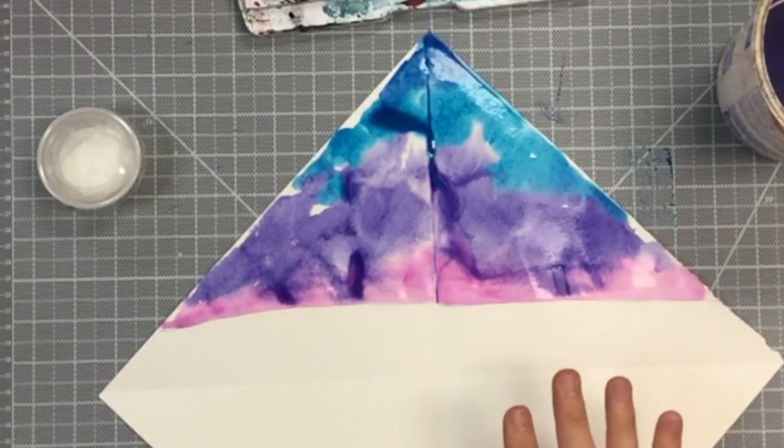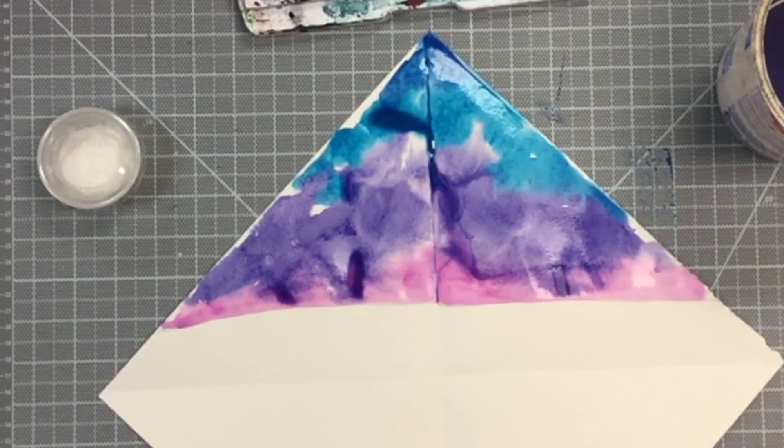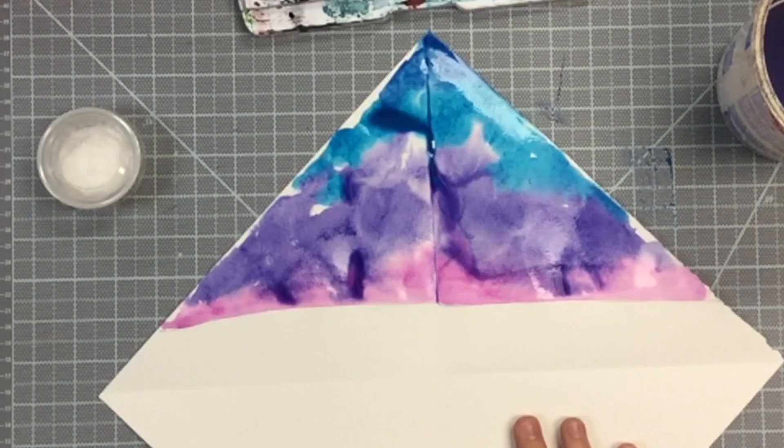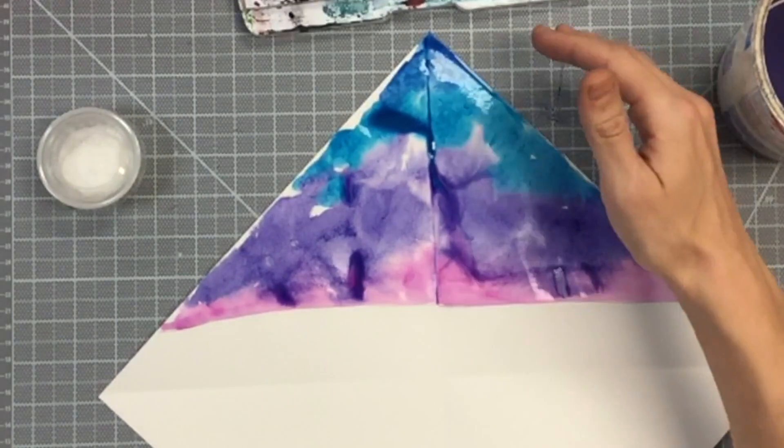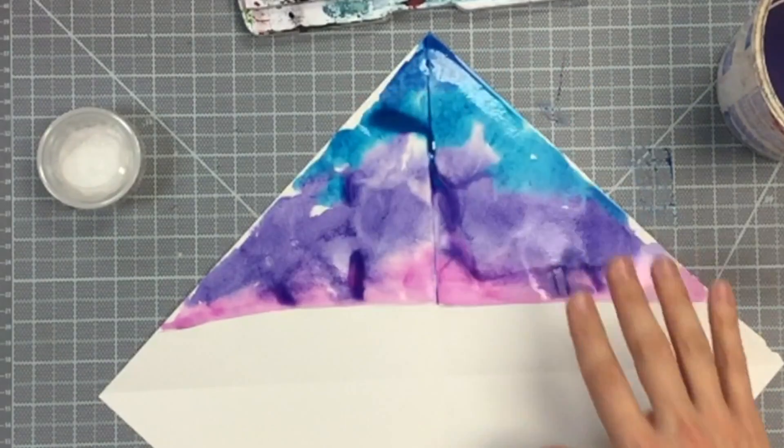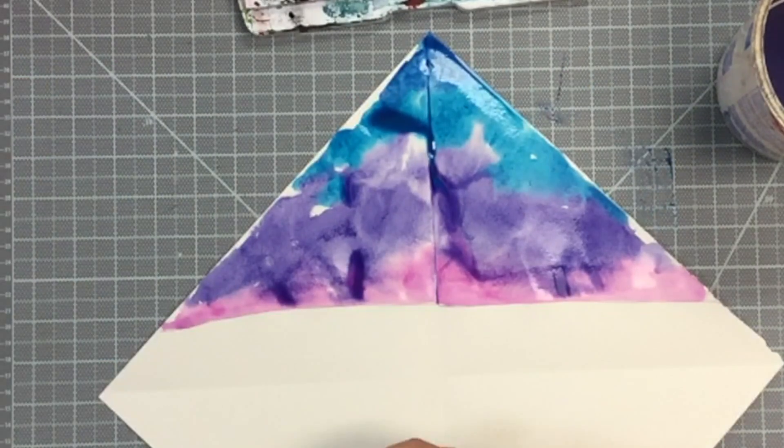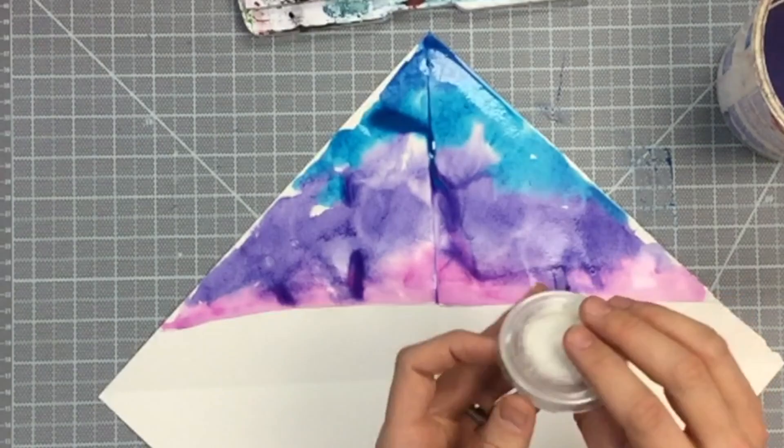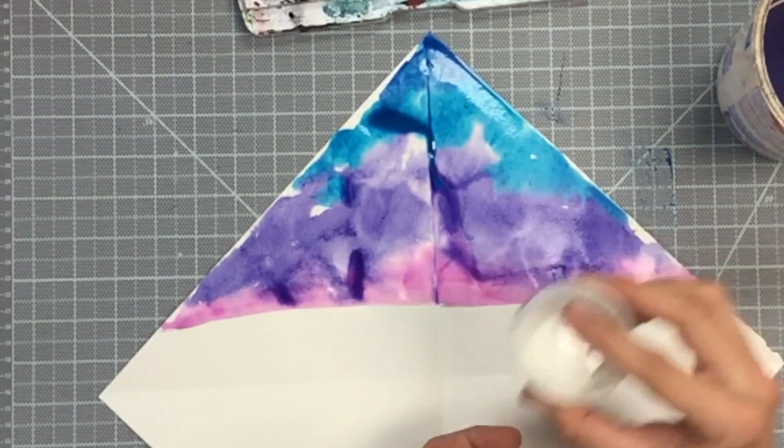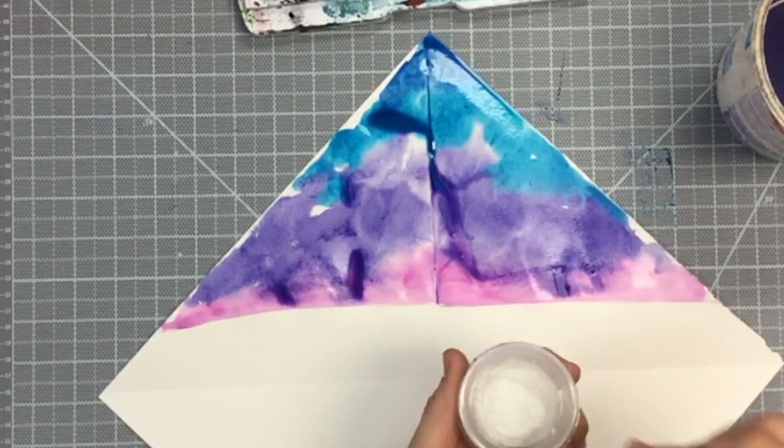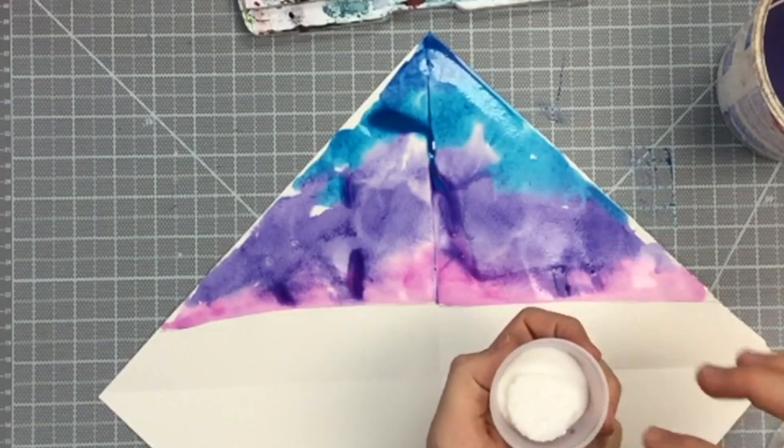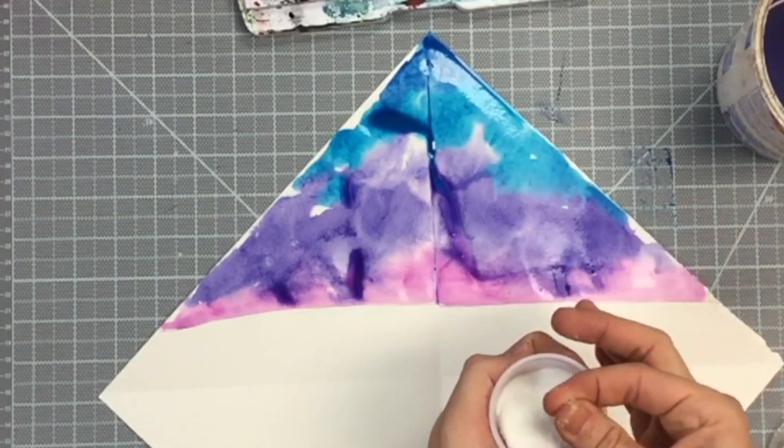Now once we've done a wet into wet watercolor painting of our sky here above our horizon line, I'm going to just let that wet paint sit on the paper and take just a little bit of salt, like we would use salt at the dining table. And I'm going to get just a few sprinkles in my fingers.